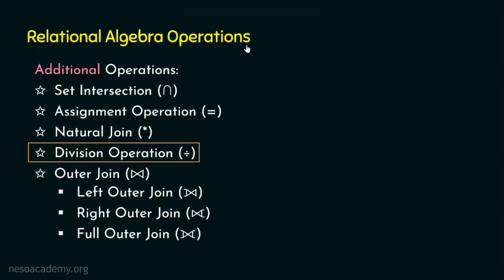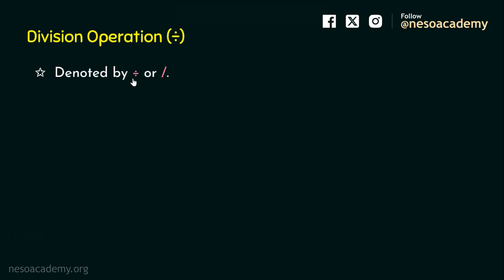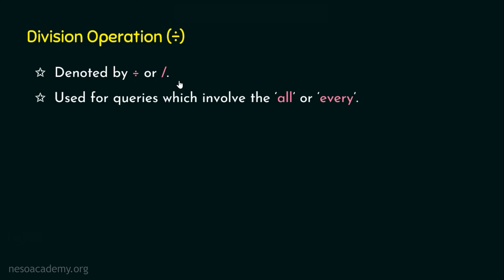First, we will understand what this division operation is. This division operation is basically represented by a divided-by symbol. In this lecture series, I will be denoting it with one symbol; however, there are some conventions which also use another symbol. Whatsoever, the concept remains the same. The first question is: why do we need the division operation? Basically, it is used when we have queries or output that involves the 'all' or 'every' concept.